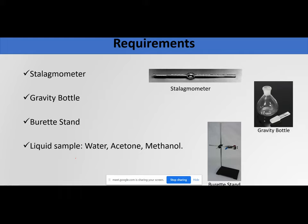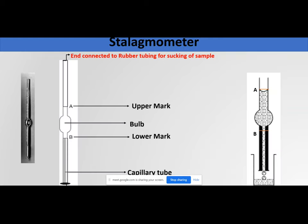The stalagmometer can be used in two ways to measure surface tension: one is the drop count method, which we discuss today, and the second is the drop weight method from last time. The stalagmometer has a tube on top and a capillary below, with two markings, A and B. For the drop weight method, we sucked liquid 1–2 cm above mark A, then collected 20 drops in the gravity bottle, weighed the empty and filled bottle to get the weight of the drops.